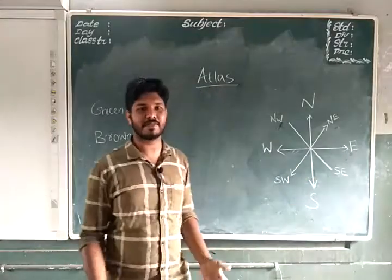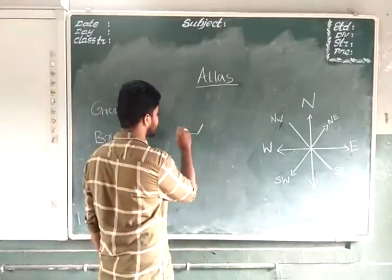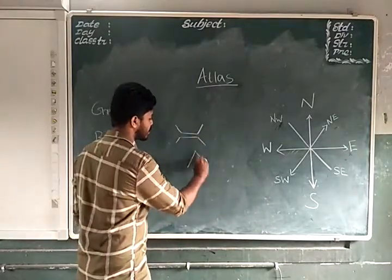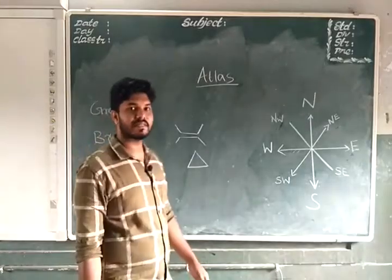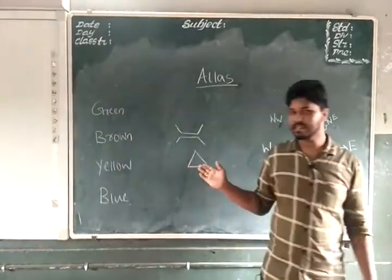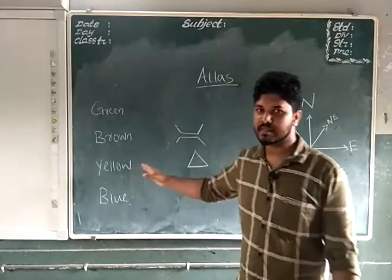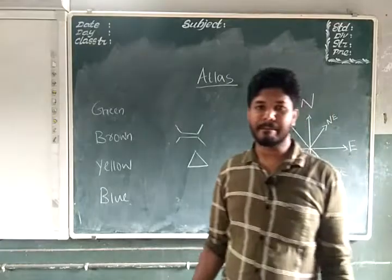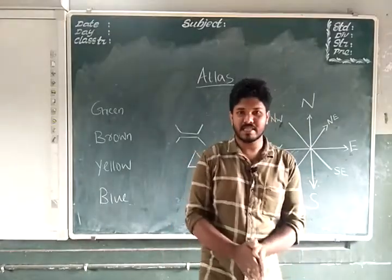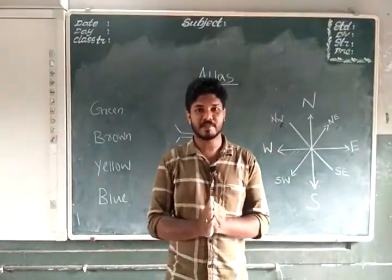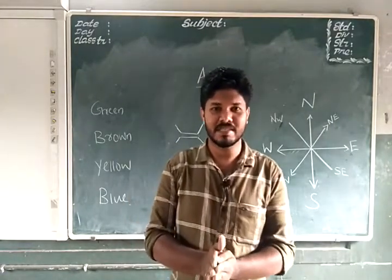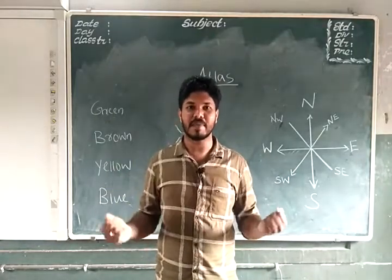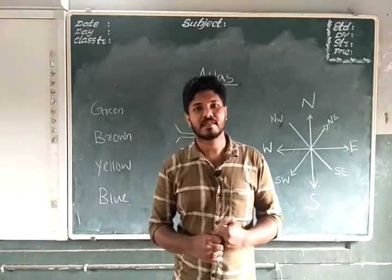And you know about the symbols, different symbols. For example, for bridges, we use this symbol. And for peaks, we use a triangle symbol. So we have to understand symbols, colors and cardinal points, cardinal directions in order to understand a map clearly. So when we understood these things, Atlas is a book which provides us maximum information within very small space. It gives us maximum information. So that's all about our chapter.